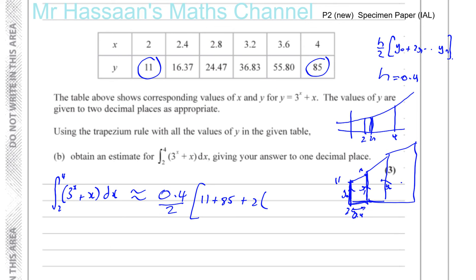Now we'll just get rid of this so that we can write what we need to write. So you've got 2 times 16.37 and you've got plus 24.47 plus 36.83 and plus 55.80, and that should give us our answer for part B.